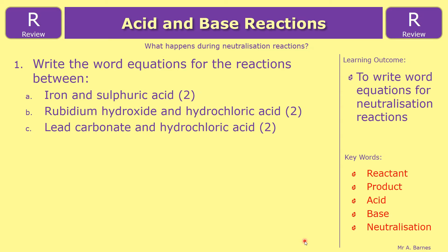We've got three review questions. Neutralization reactions: part A, iron and sulfuric acid; part B, rubidium hydroxide and hydrochloric acid; and part C, lead carbonate and hydrochloric acid. Hopefully that'll be straightforward for you now.